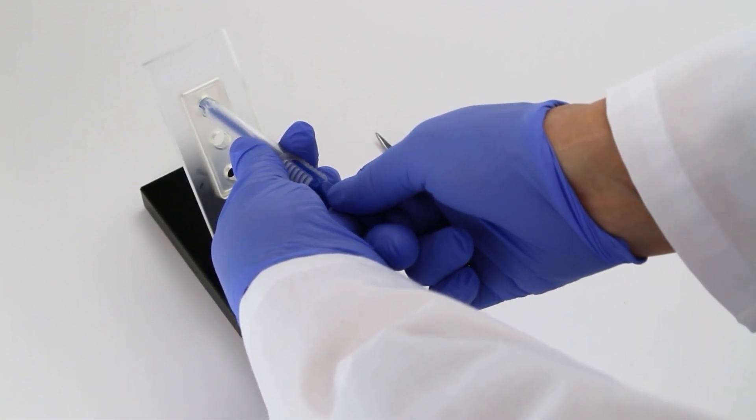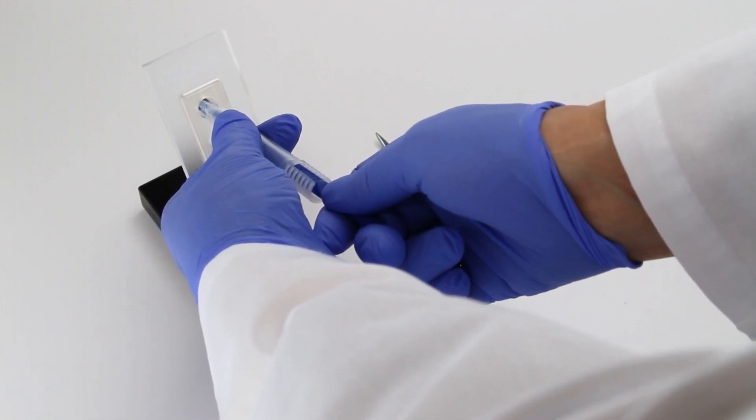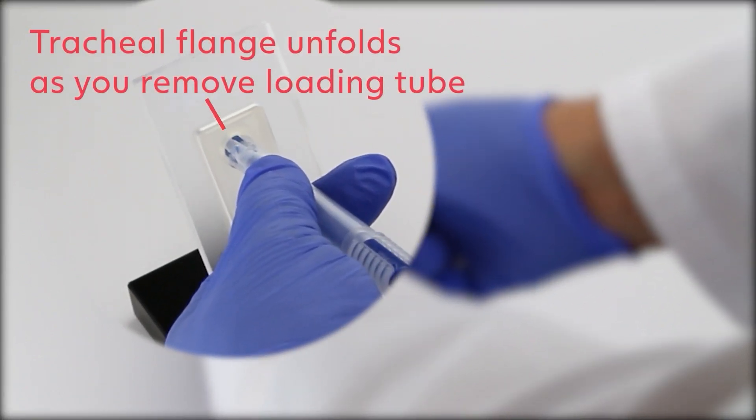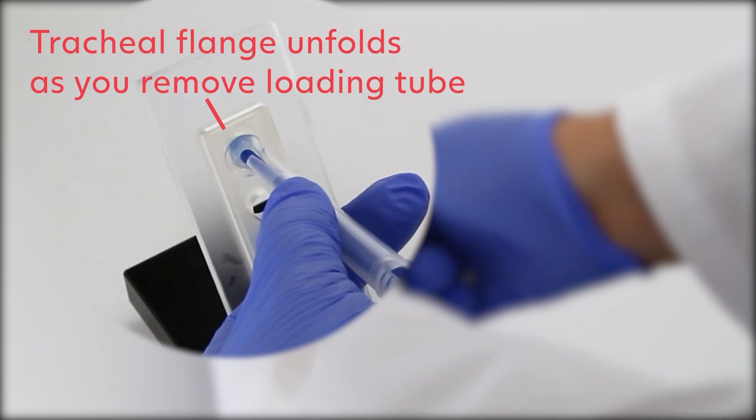Pull back gently on the loading tube and inserter pin until you feel the esophageal flange of the voice prosthesis reach the anterior esophageal wall. You will see the tracheal flange of the voice prosthesis unfold as you remove the clear loading tube.